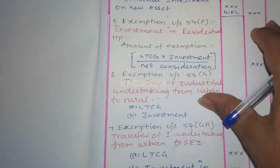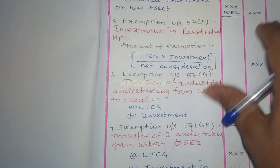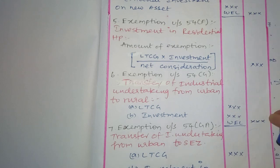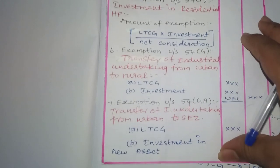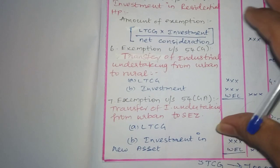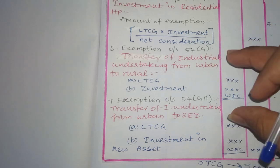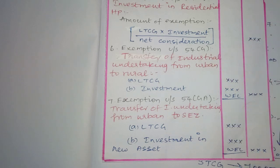How do we calculate the amount of exemption under Section 54F? Long Term Capital Gain and Actual Investment in the New Asset — whichever is the least — will be exempt.